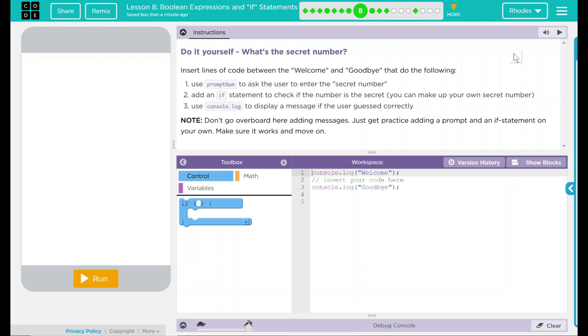Add an if statement to check if the number is the secret. You can make up your own secret number. Use console.log to display a message if the user guessed correctly.